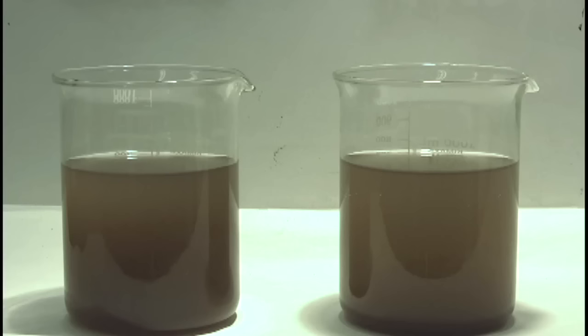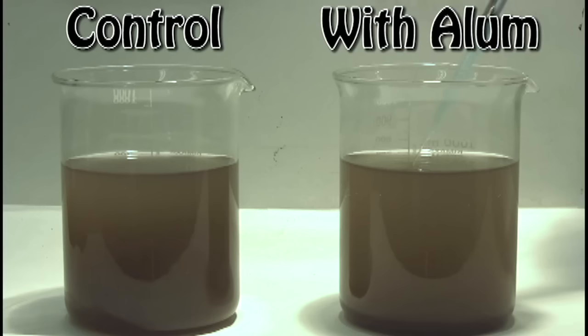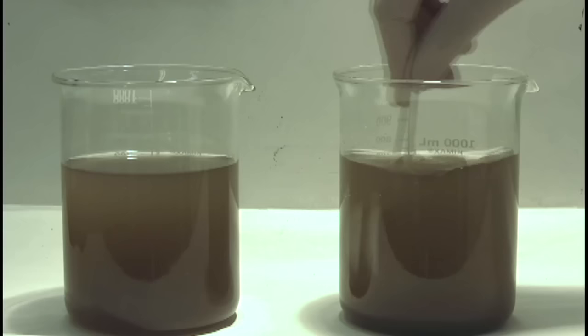Here are two beakers filled with the same amount of muddy Charles River water. On the left is our control which will remain untouched, and on the right we'll add three milliliters of prepared flocculant solution. Then we'll stir for two minutes and wait.